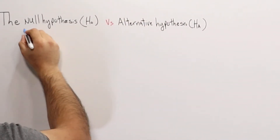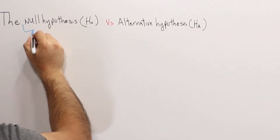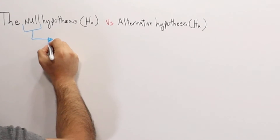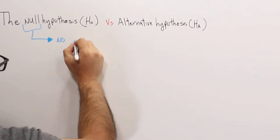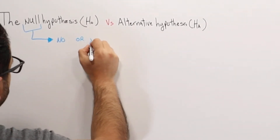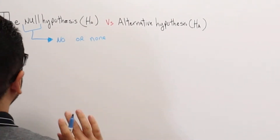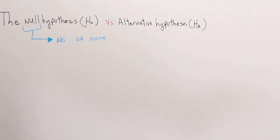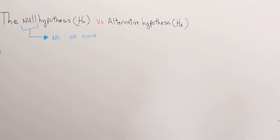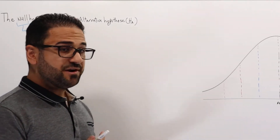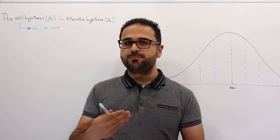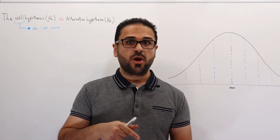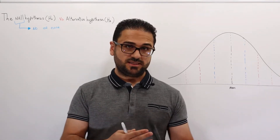So first of all, null hypothesis — the word null itself means no or none. So in a clinical study, basically what happens is researchers are trying to prove that the new medication they're developing is basically better than an existing medication that is already in the market, or it's better than a placebo.